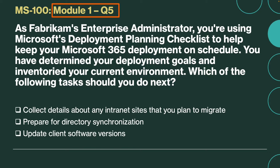Question number five. As Fabrikam's enterprise administrator, you are using Microsoft's deployment planning checklist to help keep your Microsoft 365 deployment on schedule. You have determined your deployment goals and inventoried your current environment. Which of these following tasks should you do next? Is it to collect details about internet sites you plan to migrate, prepare for directory synchronization, or update client software versions? The correct answer is update client software versions. After determining your deployment goals and taking inventory, the next step is to fix potential deployment blockers. Updating client software versions is one of the tasks completed within this step.